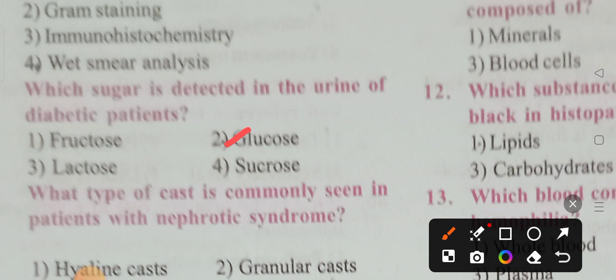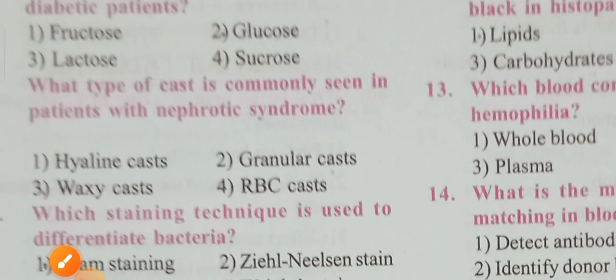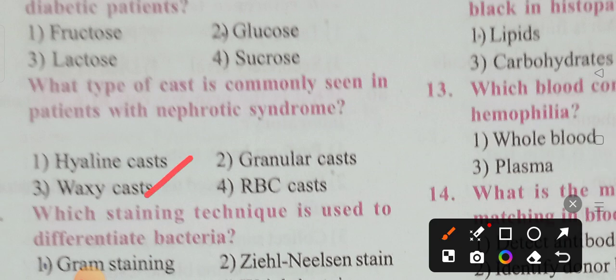Glucose is the sugar detected in the urine of diabetic patients. Next: what type of cast is commonly seen in patients with nephrotic syndrome? Options are hyaline cast, granular cast, waxy cast, RBC cast. Option 3 is the correct answer — waxy cast.